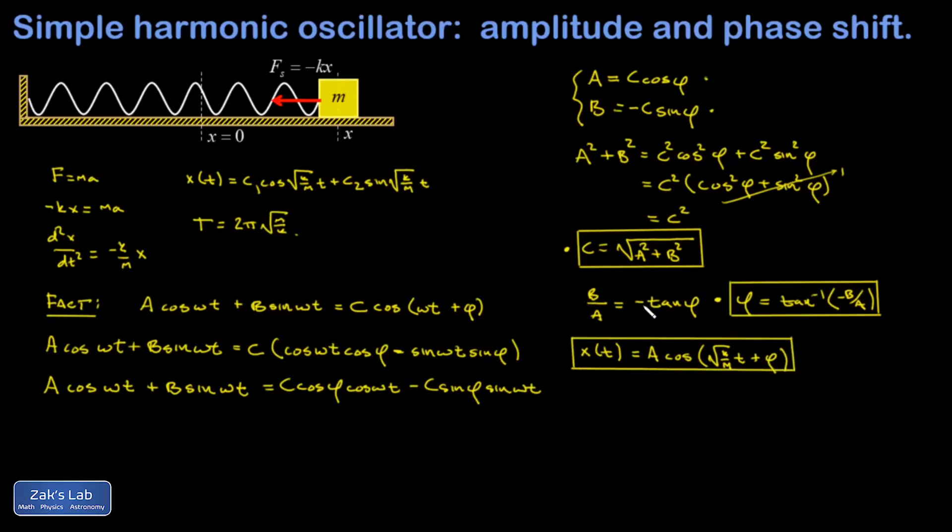Any general solution of a second-order differential equation has to have two arbitrary constants. Instead of c1 and c2, we now have A and φ. Now, there are some advantages to expressing it this way.